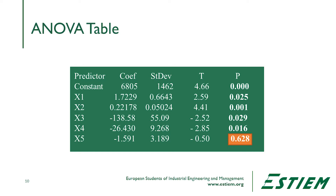Interaction effects can be rather interesting, and we'll talk about these more when we discuss designed experiments. We can also get information out of the ANOVA table. Here I have a more complex ANOVA with five different X's. I see the coefficient from the formula, the standard deviation for each of the terms, the values, and finally the P value. X5 has a P value of 0.628; all the others are under 0.05. This means X5 is not a significant factor, and since each variable is independent, I can reduce the model by eliminating X5 from the analysis.